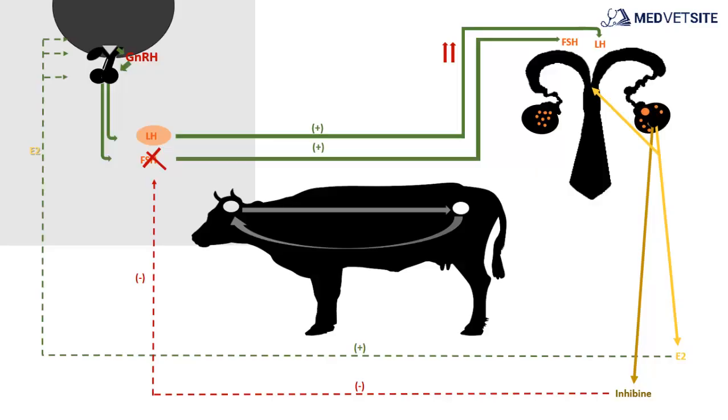capillaries are broken, causing these remains to fill with blood, forming a clot called corpus hemorrhagicum. By action of the hormone LH, this clot becomes a yellow body or corpus luteum.